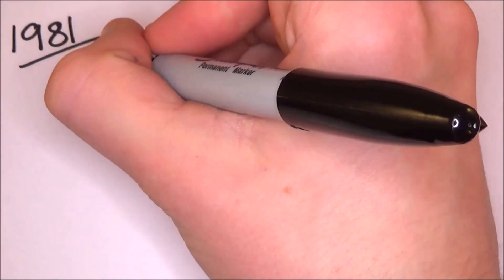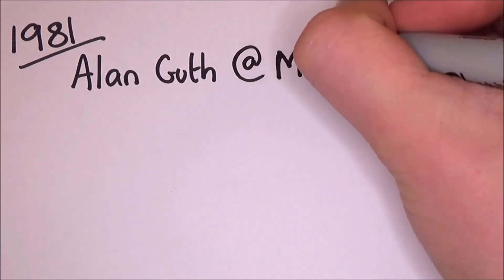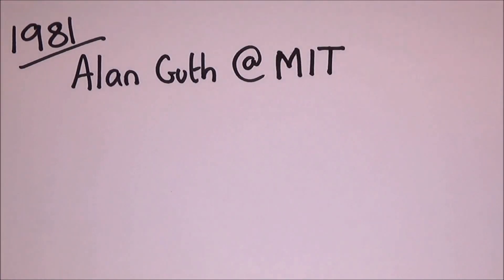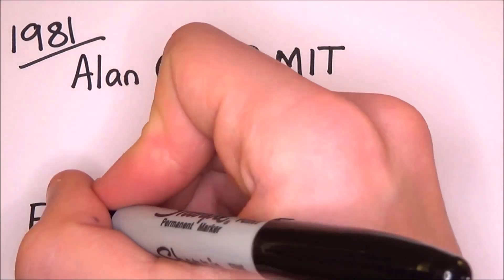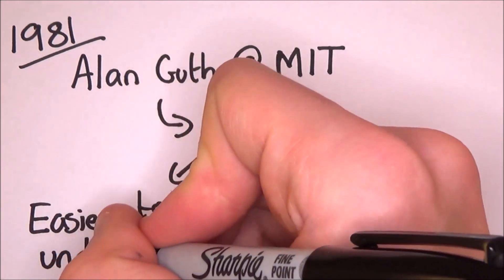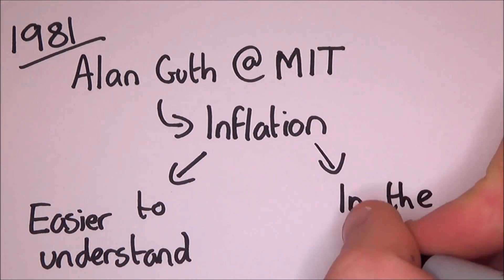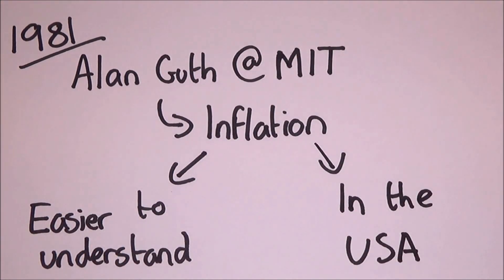Then in 1981, Alan Guth at MIT came up with his own work on inflation without even knowing about Starobinsky's work. His work was more accessible in both senses of the word. He used the idea of inflation which is a lot easier to understand and being in the US allowed other universities to get the information and it became widespread.